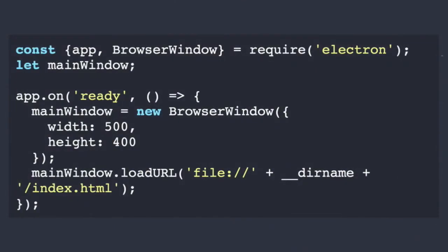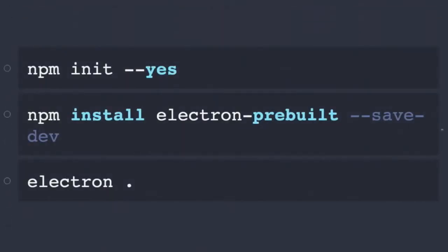The Hello World for Electron is a little bit more involved. By default, if you try to start your app, nothing happens because you have to open the windows from the main script. This is what a main script looks like — it requires a few things from Electron, and when the ready event is fired it creates a new browser window and loads your HTML file. It's similar to NWS except that's done under the hood. With Electron you have to do it manually. You also need a package.json, but since the HTML file isn't the entry point, the main property points to a JavaScript file — usually index.js. Then once you install the Electron module from NPM, you can run Electron and your app will open.